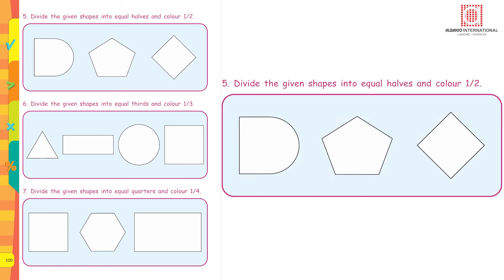Question number five: divide the given shapes into equal halves and color one upon two. For the first one, draw a horizontal line in the middle of the shape — it divides it into two equal parts, then color it. For the next two pictures, you know how to do it.